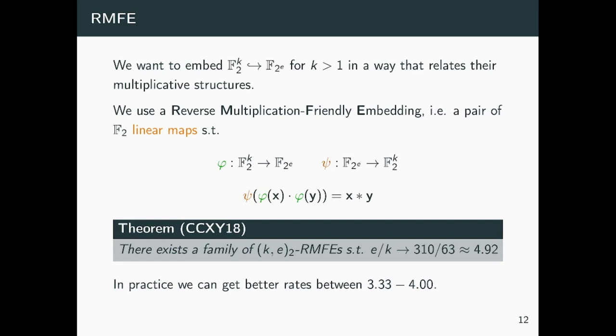These maps are useful in our settings, or in other settings like multiparty computation, because first of all, they are linear. So, as before, using them, we can easily check linear constraints. But furthermore, they also relate the multiplicative structure of F2 and the larger field.